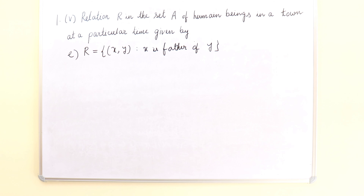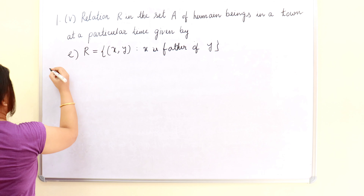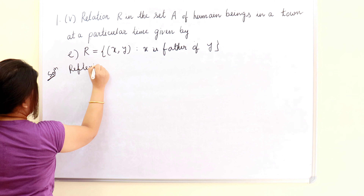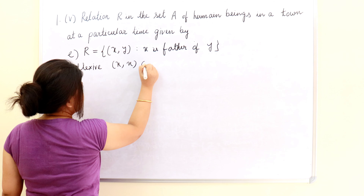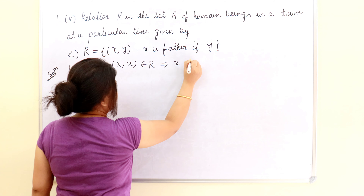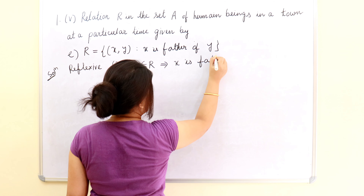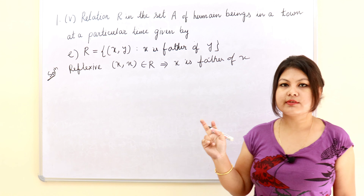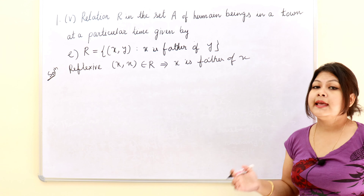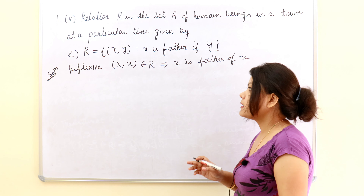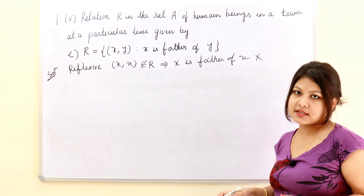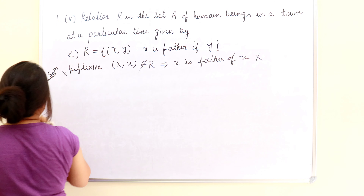Next question: R = {(X,Y): X is father of Y}. Again, first we discuss reflexive. The condition for reflexive is: (X,X) belongs to R, which means X is father of X. Just like the last question, a person cannot be father of himself. That's why this is not acceptable, (X,X) does not belong to R, and the relation is not reflexive.